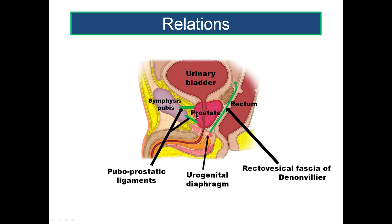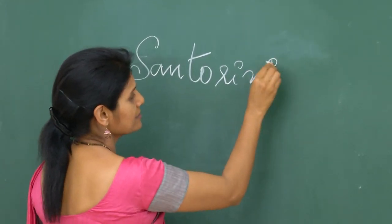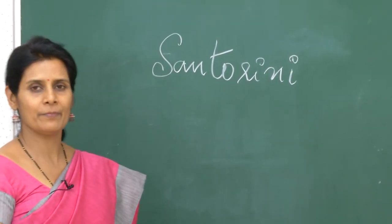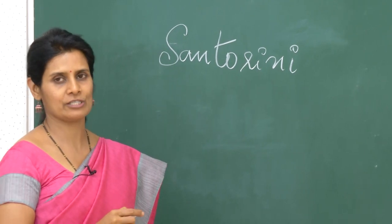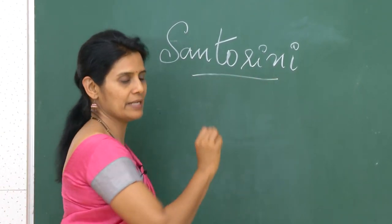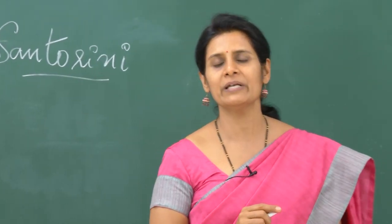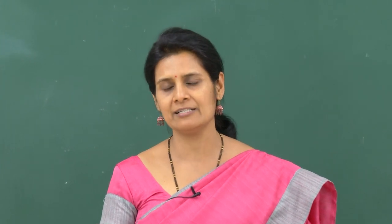The retropubic space, which separates the prostate from the symphysis pubis, is filled with fat and also contains the dorsal venous plexus of Santorini. This plexus is contributed by the deep dorsal vein of the penis and communicates posteriorly with the prostate. So this Santorini plexus is present in the retropubic space of Retzius along with the puboprostatic ligaments and fat. That is about the anterior surface of the prostate.